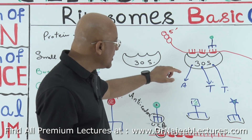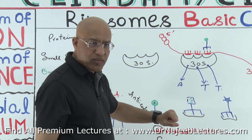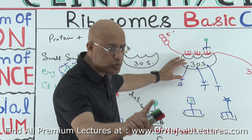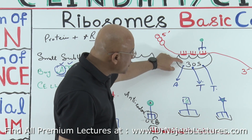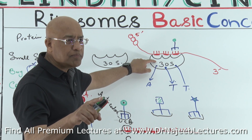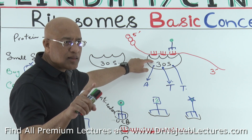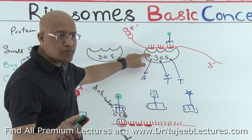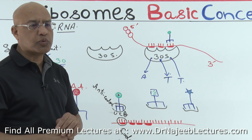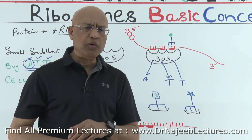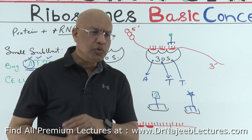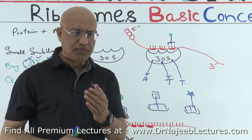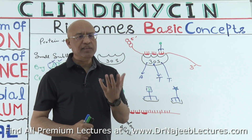Aminoglycosides are bactericidal because they severely inhibit protein synthesis. When aminoglycosides bind to the 30s subunit, the initiation complex is not formed. This leads to either termination of protein synthesis or very abnormal protein synthesis due to misreading of messenger RNA, eventually causing death of bacteria. Aminoglycosides are usually used for aerobic gram-negative organism infections, as aerobic gram-negative bacilli are very susceptible to aminoglycosides.